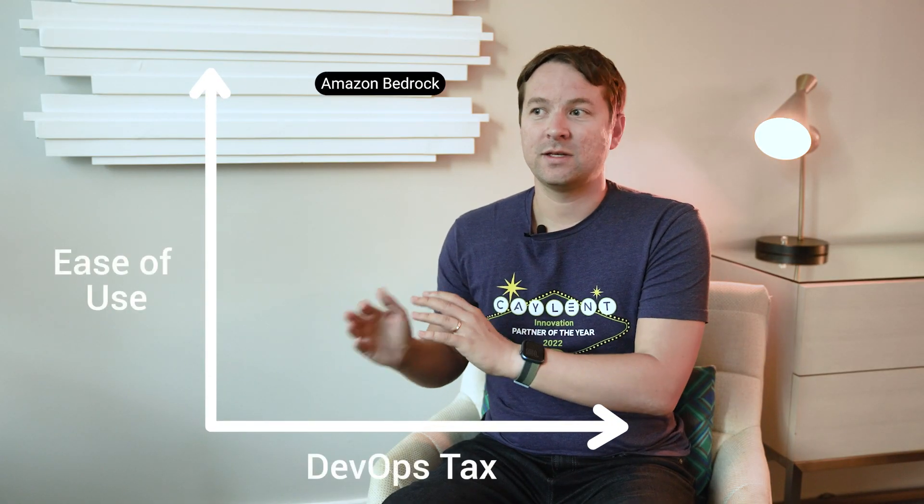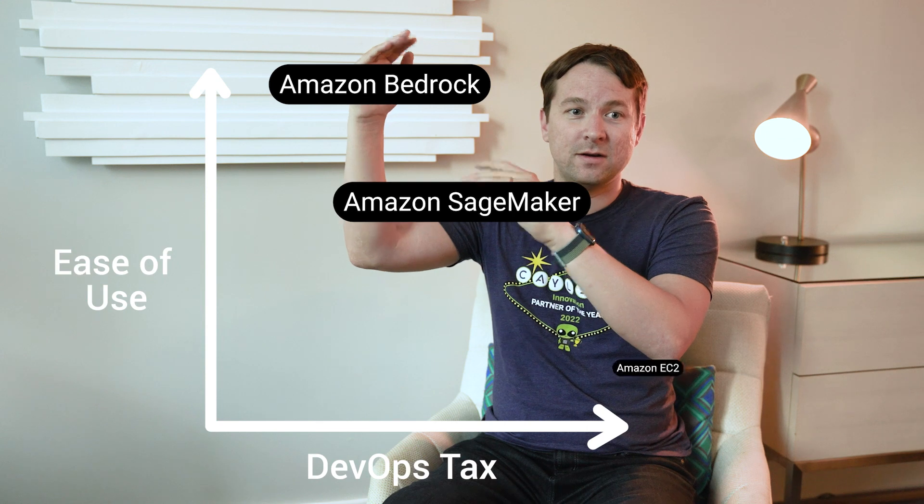So what does this all mean when you put it all together? Along this entire spectrum, you're trading DevOps and MLOps tax — meaning work that you as a human have to do to maintain these services and underlying compute instances — for ease of use. Bedrock's ease of use is way at the top, then SageMaker, and then EC2 on the bottom. Different customers are going to take advantage of different parts of this. Some may use SageMaker or EC2 in one place and Bedrock in another, depending on the access patterns involved in the use case.